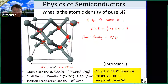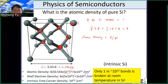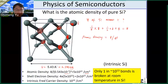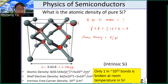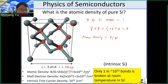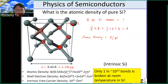So this is the atomic density of silicon — in other words, within one centimeter cubed you will have five times 10 to the power 22 atoms. The shell electron density will be four times this atomic density, because one silicon atom has four shell electrons. Multiplying by four, you get two times 10 to the power 23 per centimeter cubed.